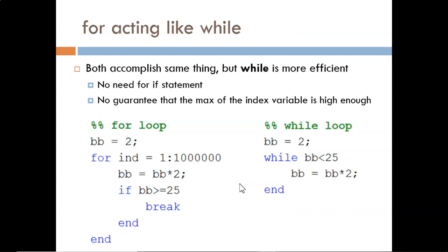Let's flip the script in this example to see a case where the while loop is more efficient. Here, BB starts at the value 2. Then, we double its value repeatedly until BB gets larger than 25.